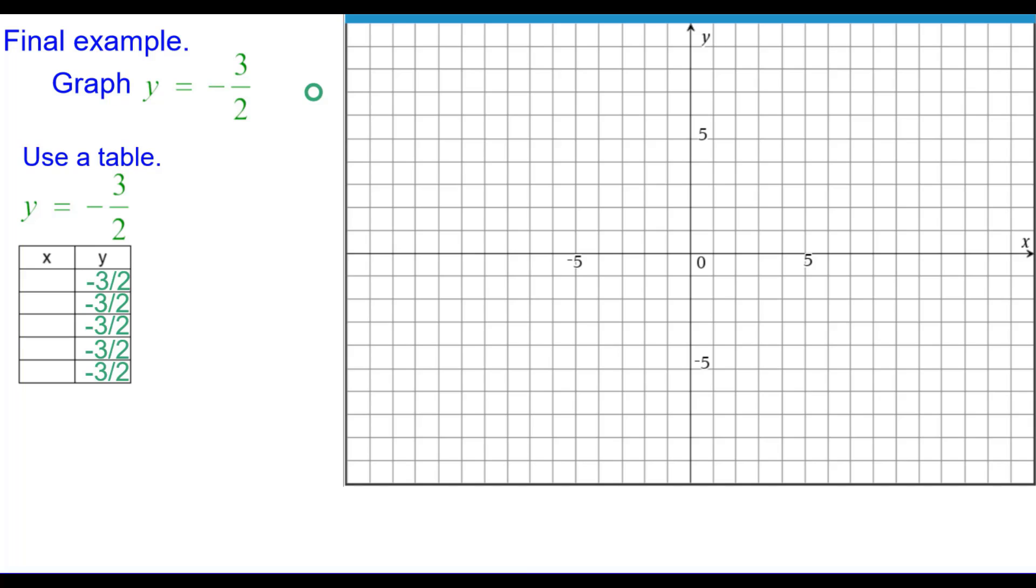So putting in y equals negative 3 halves for every single ordered pair. We can put any numbers in for x because they're not defined in the equation at all. And then we can go ahead and plot those five points.